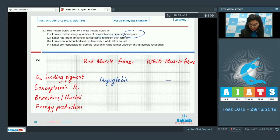That's why white muscle fibers are lighter in color. Option two: latter has larger amount of sarcoplasmic reticulum. Red muscle fibers have less of them and white muscle fibers have more of sarcoplasmic reticulum, so the second option is correct because it's a right statement. Option number three: former are unbranched and multinucleated while latter are not - this is untrue, both of them are unbranched and multinucleated. Option number four is in relation with the energy production and the type of respiration. The red muscle fibers carry out aerobic oxidation for energy production.